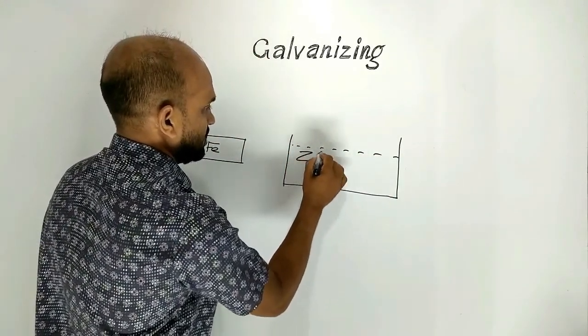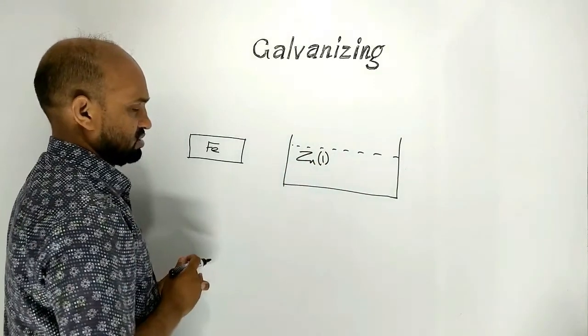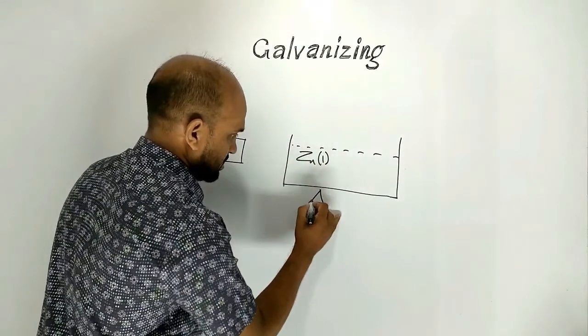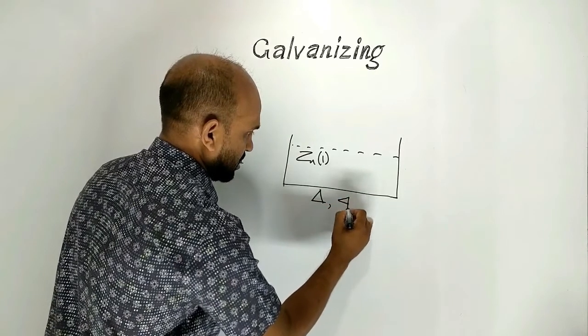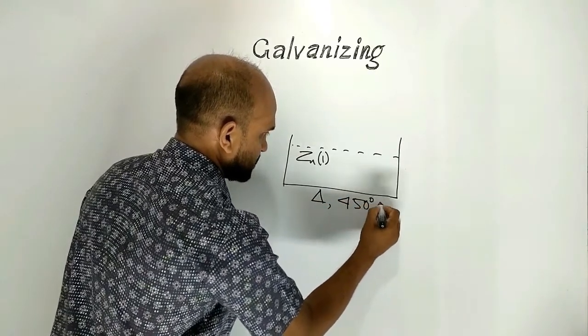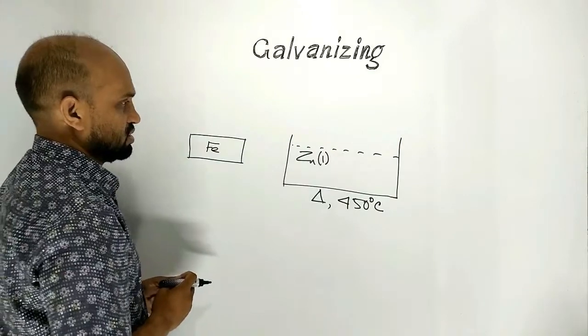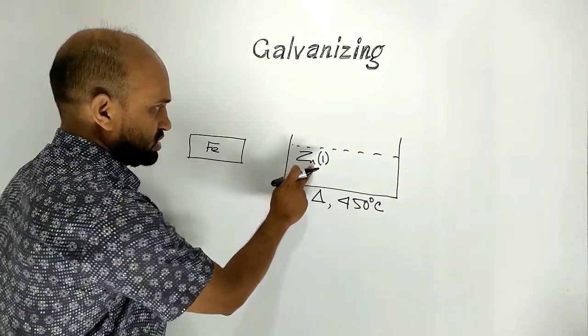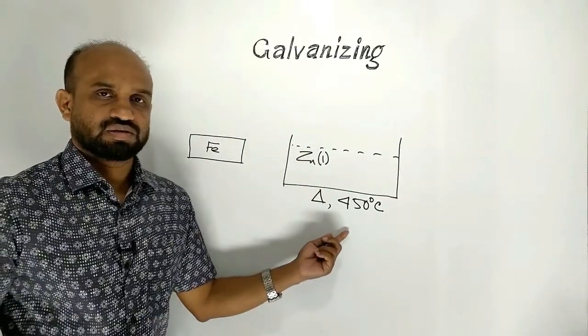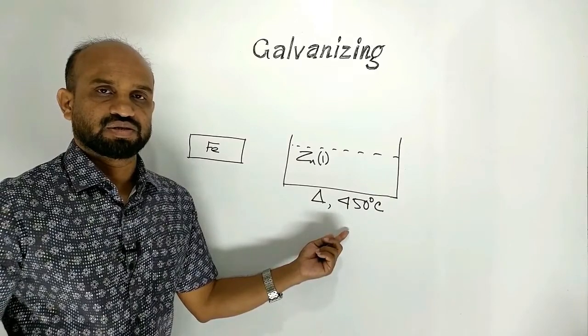Where liquid zinc is present at the temperature around 450 degree Celsius. This is liquid zinc at 450 degree Celsius temperature.